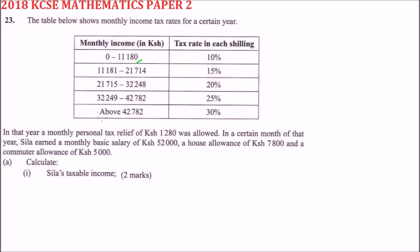In that year there was a mandatory personal relief of one thousand two hundred and eighty shillings. In a certain month of that year, Sira earned a basic salary of fifty-two thousand, a house allowance of seven thousand eight hundred, and a commuter allowance of five thousand Kenyan shillings.